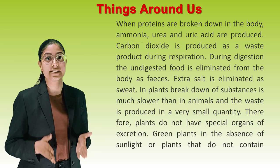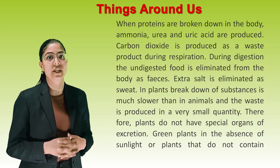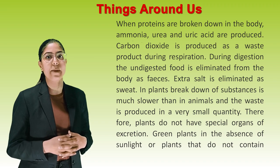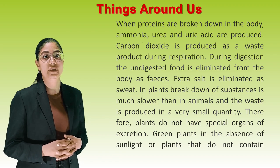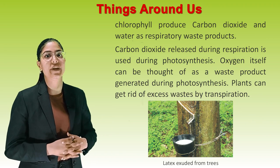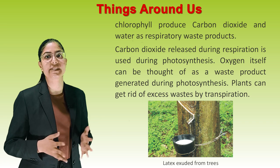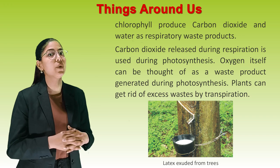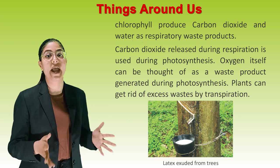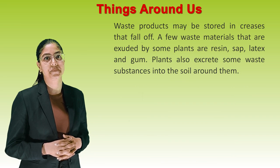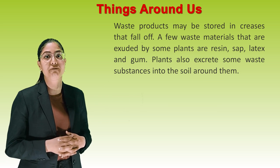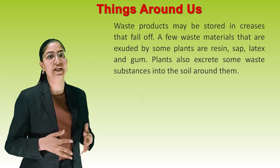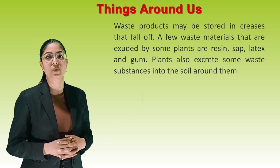In plants, breakdown of substances is much slower than in animals, and waste is produced in very small quantities. Therefore, plants do not have special organs of excretion. Green plants in the absence of sunlight, or plants that do not contain chlorophyll, produce carbon dioxide and water as respiratory waste products. Carbon dioxide released during respiration is used during photosynthesis. Oxygen itself can be thought of as a waste product generated during photosynthesis. Plants can get rid of excess waste by transpiration. Waste products may be stored in leaves that fall off. A few waste materials exuded by some plants are resin, sap, latex, and gum. Plants also excrete some waste substances into the soil around them.